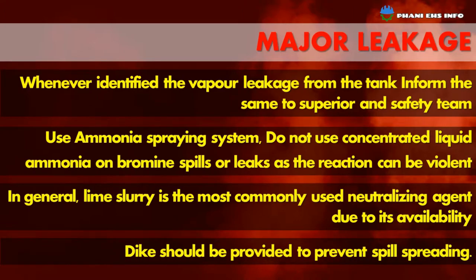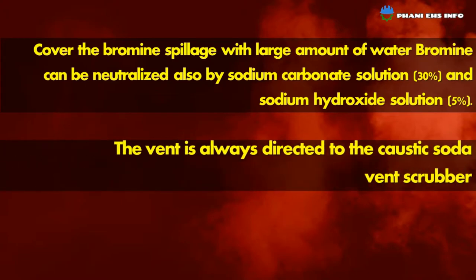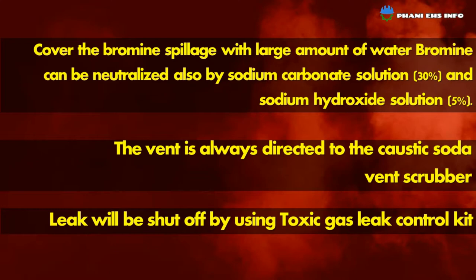A dike should be provided to prevent spill spreading. Cover Bromine spills with a large amount of water. Bromine can also be neutralized by sodium carbonate solution (30%) and sodium hydroxide solution (5%). The vent is always directed to the caustic soda vent scrubber. Leaks will be shut off by using a toxic gas leak control kit.